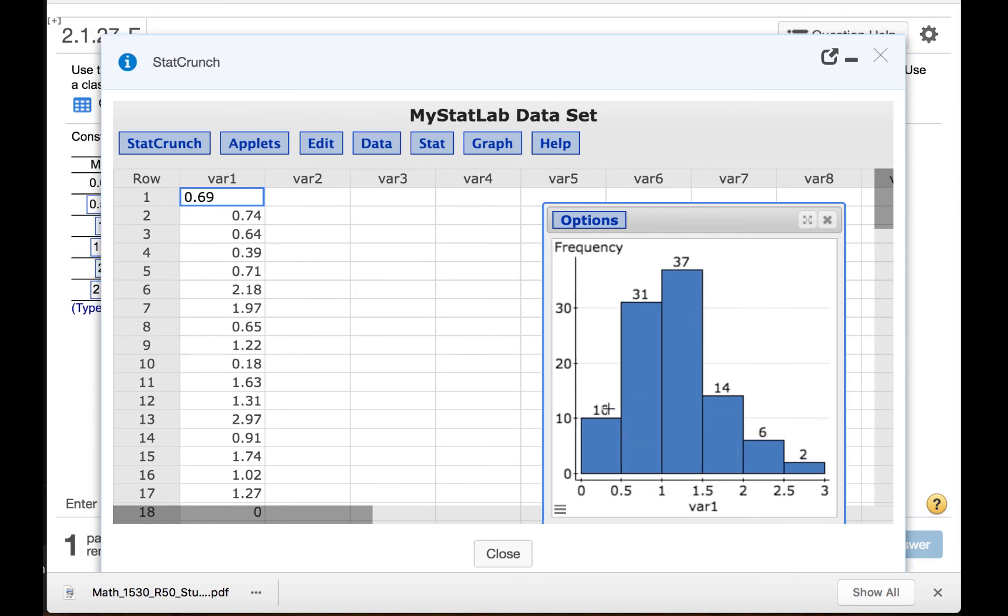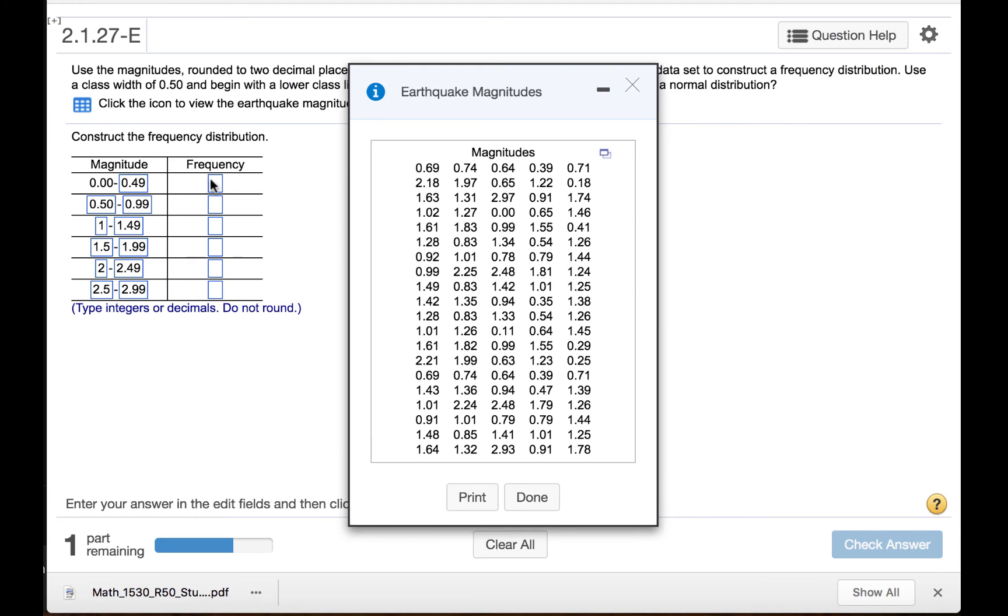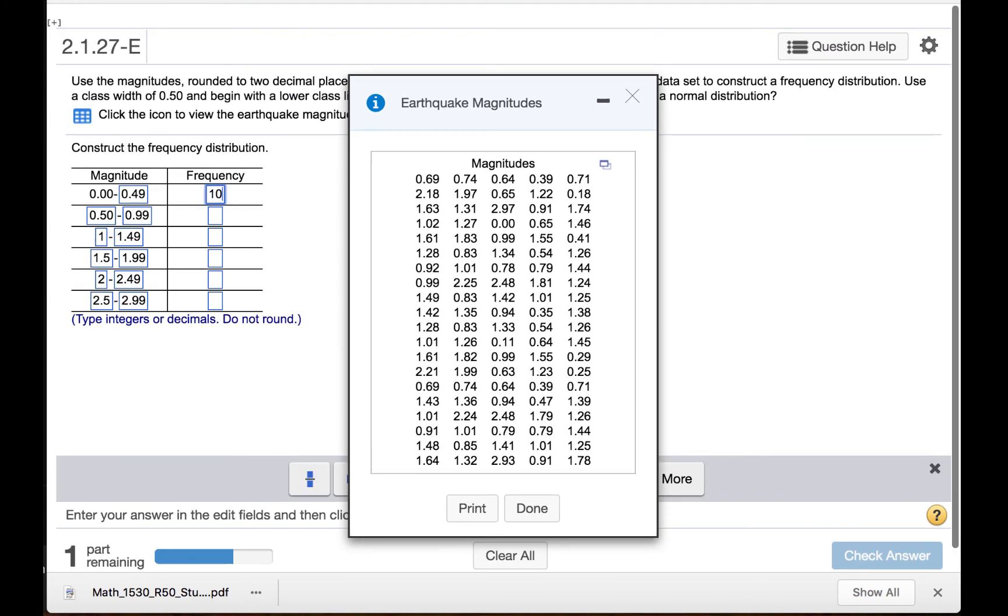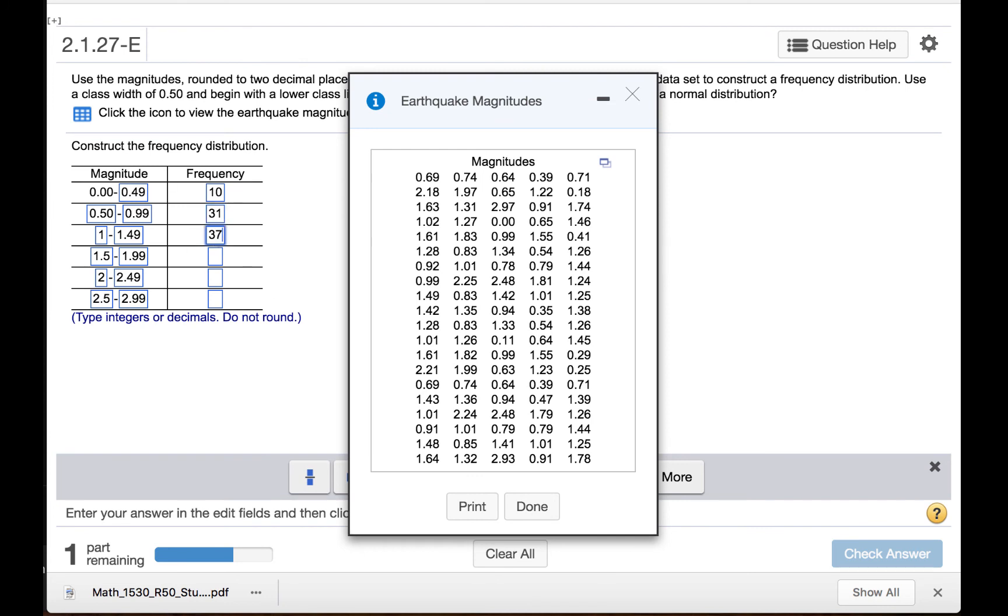So we will use these frequencies to fill out the frequency column in the homework problem. So there were 10, 31, 37, 14, 6, and 2.